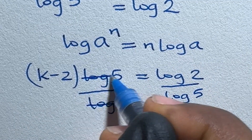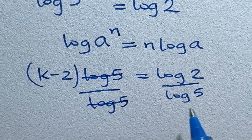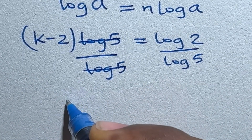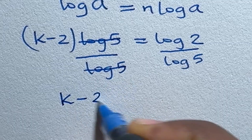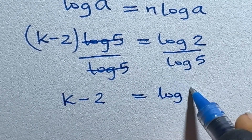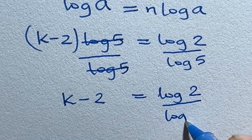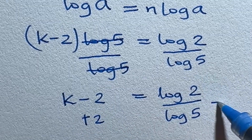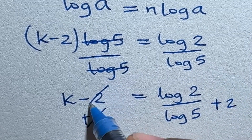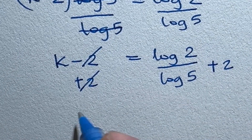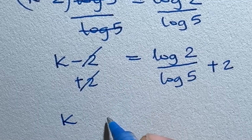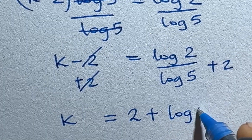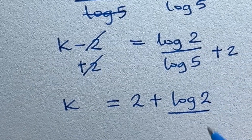Applying that here, k minus 2 becomes the coefficient, then you have log 5 equal to log 2. Notice that both logarithms are in base 10. Let us divide both sides by log 5 — this removes log 5 from the left hand side, leaving only the unknown. We now have k minus 2 is equal to log 2 divided by log 5. Then we add 2 to both sides.